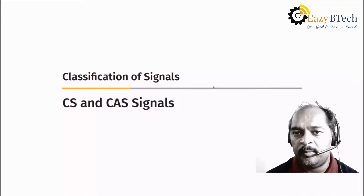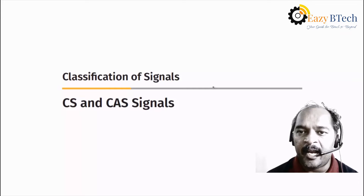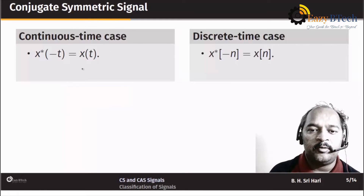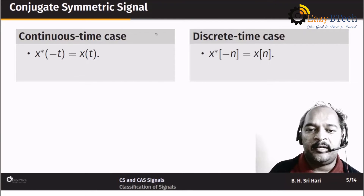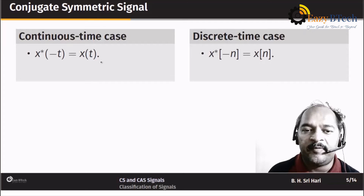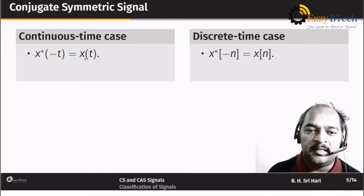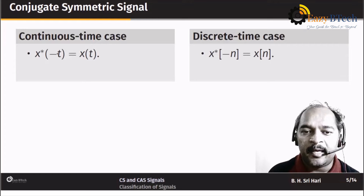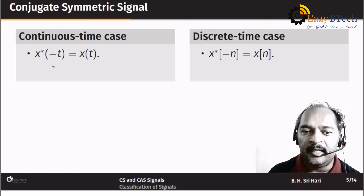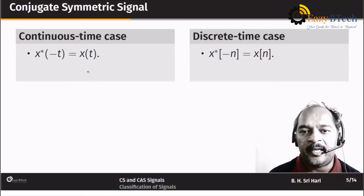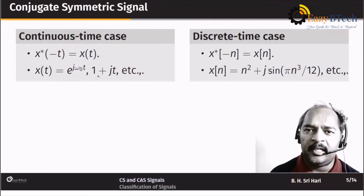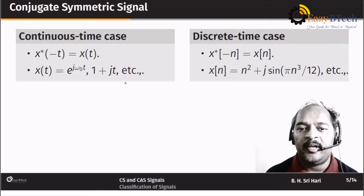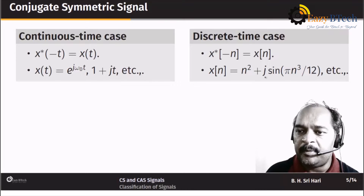First we will talk about conjugate symmetric and conjugate anti-symmetric signals. For the continuous time case, it is defined as x-star of minus t equals x of t — meaning you replace time t with minus t and then take the conjugate of the signal. We assume the signal is complex. Examples include e to the power j omega-naught t and 1 plus jt, and we can have infinite number of examples.